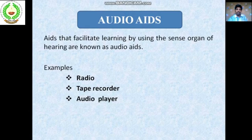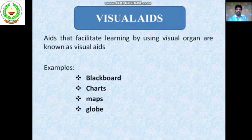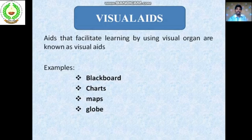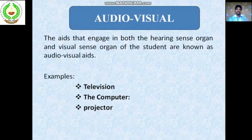Some examples of audio teaching aids are radio and tape recorder or audio player. Visual teaching aids facilitate learning by using the visual organ. Some examples are blackboard, charts, and maps. Audio-visual teaching aids engage both the sense of hearing and vision — we can both see and hear them.